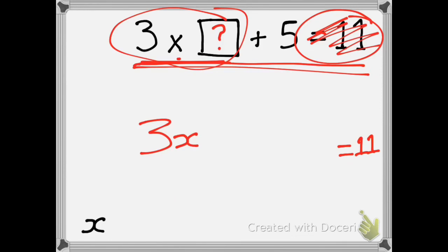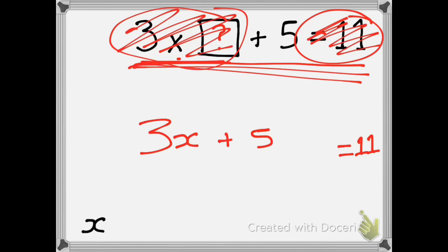So I've taken care of that bit now and I'm just left with plus 5, so I'm going to keep that the same. So 3x plus 5 equals 11. I have taken that question and expressed it algebraically. I've expressed it with numbers. Now moving on.